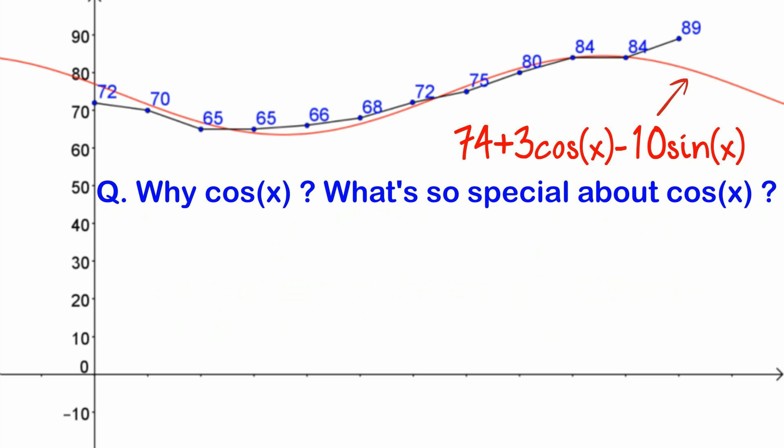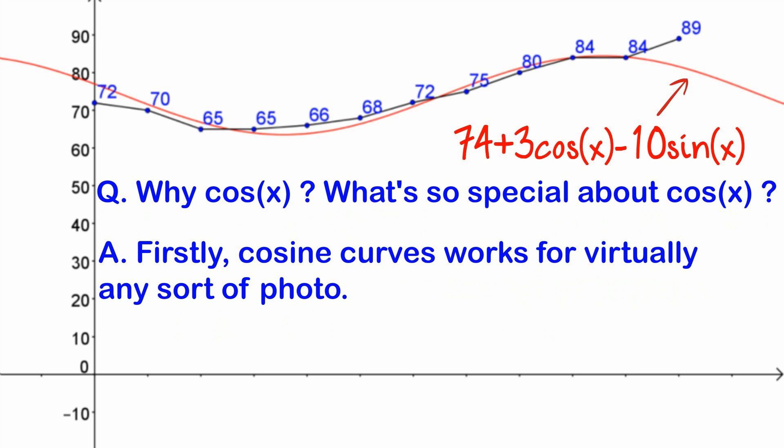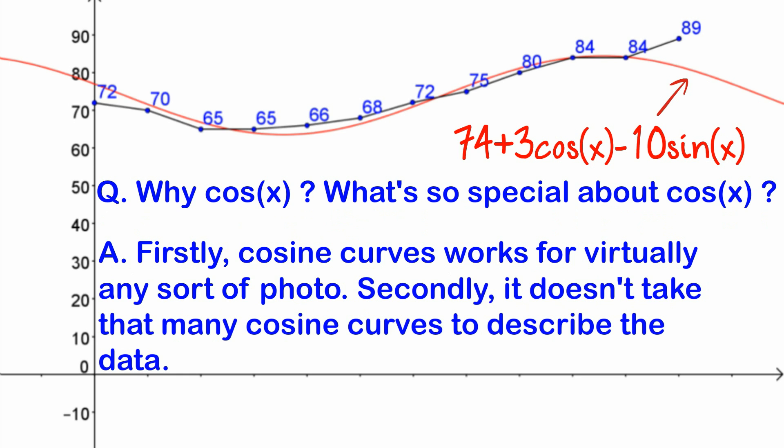The final question is: why cos x? What's so special about cos x? There are two attributes that these cosine curves satisfy. The first is that we want to be able to handle virtually any sort of data that comes from a photo — the process needs to work for virtually any photo. The second is that it doesn't take that many cosine curves to describe the data, as we've seen in the example. Those two attributes make cosine curves better than other sorts of curves you could use, but beyond that it's really something for another video to explain.